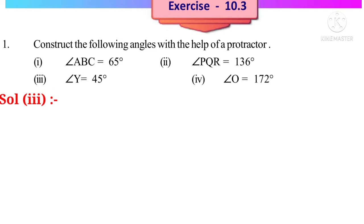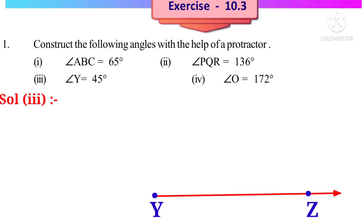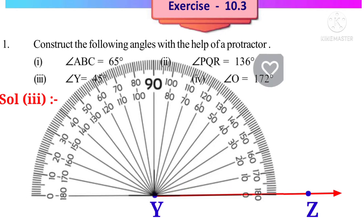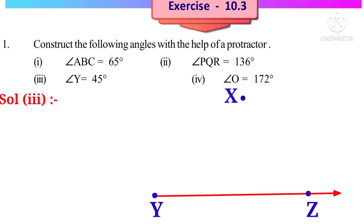Third angle XYZ = 45 degrees. Put any two points Y and Z and draw a ray through them. Put the base of the protractor on line YZ with center at Y. On the right-hand side lower scale, five lines after 40 — that is 45. Put a point and name it X, then draw a ray through YX. Angle XYZ = 45 degrees.